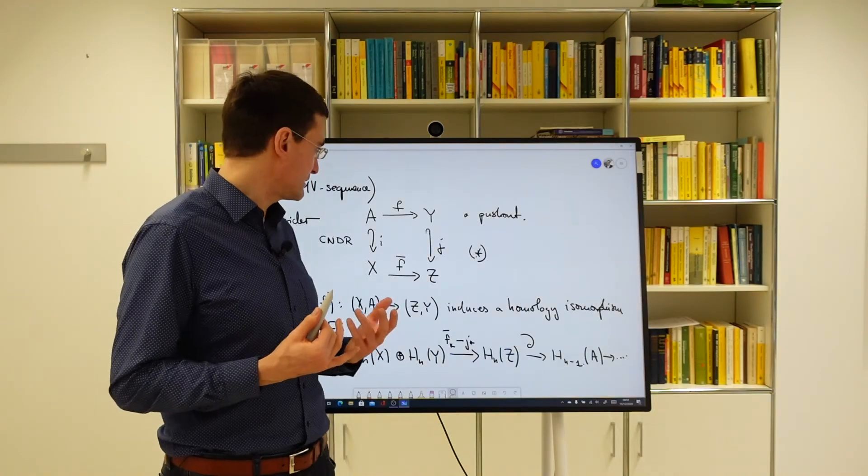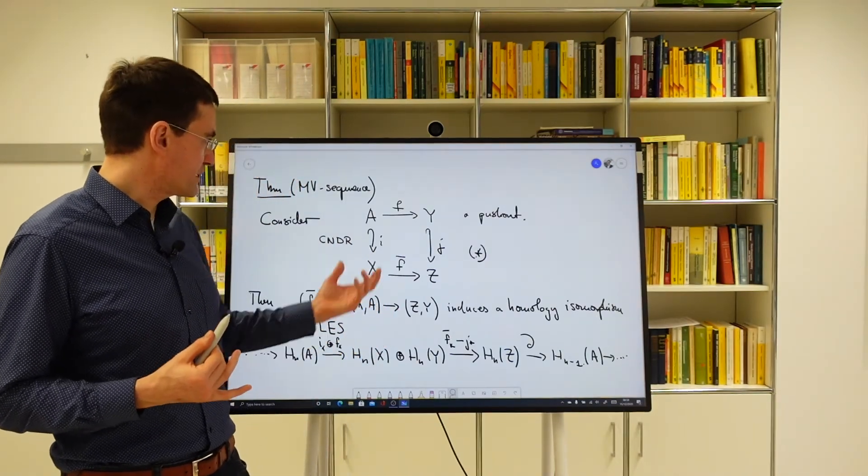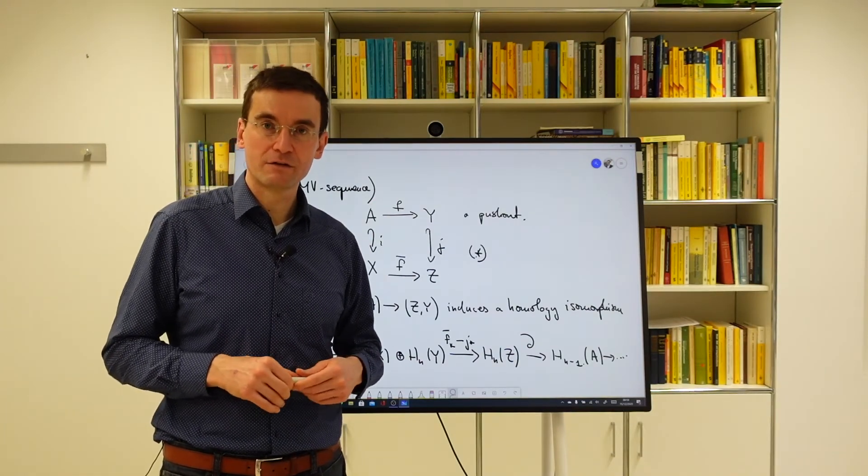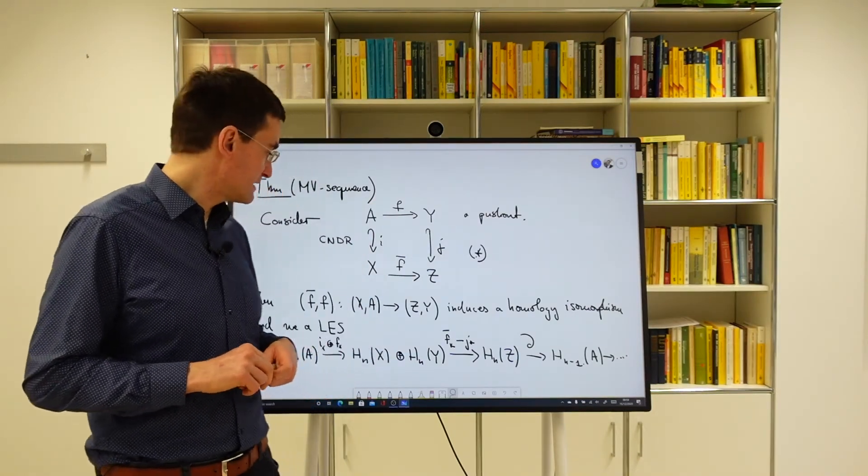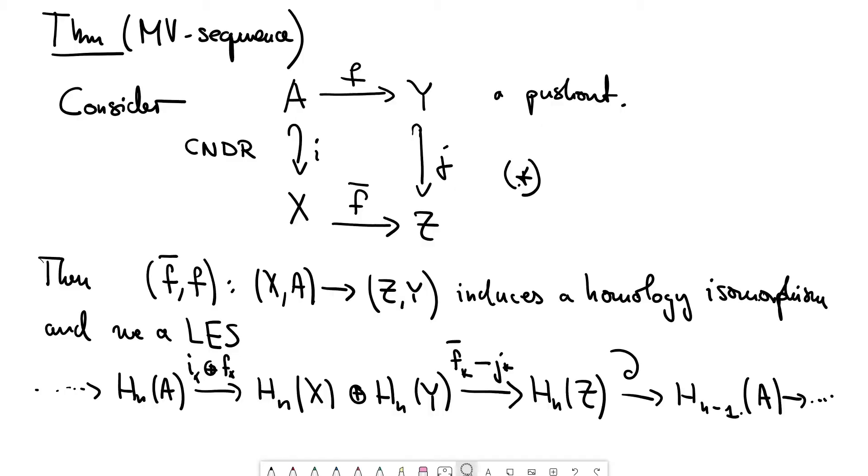But now we are in a slightly more general situation. We really have this pushout. So F is not necessarily injective. It's just any continuous map. And still this holds true.